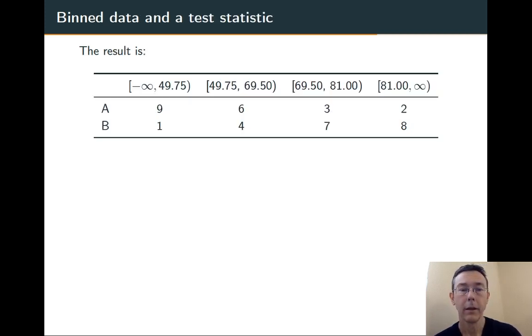Here's what we get. For example, in group A, we have nine observations less than 49.75, six between 49.75 and 69.50, and so on.